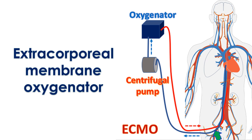The blood is oxygenated using the membrane oxygenator and returned to the body through a small tube placed in the femoral artery — the blood vessel in the groin carrying oxygenated blood. The tip of the tube extends backward, higher up into the aorta, the largest blood vessel carrying oxygenated blood to the whole body.